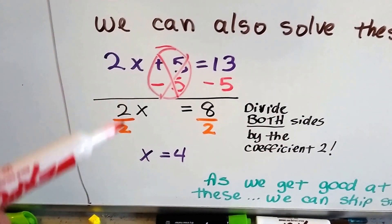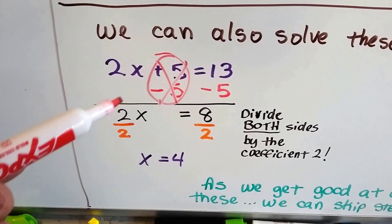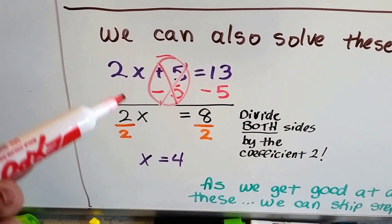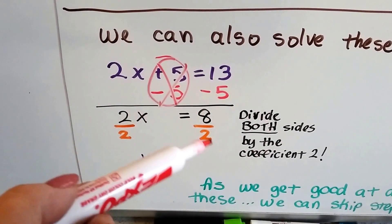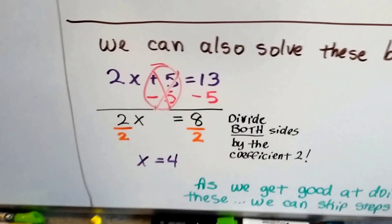So we would divide by the 2. 2 divided by 2 creates a 1, that's our buddy, the invisible 1. And 8 divided by 2 is 4. x is 4. We go a lot quicker.